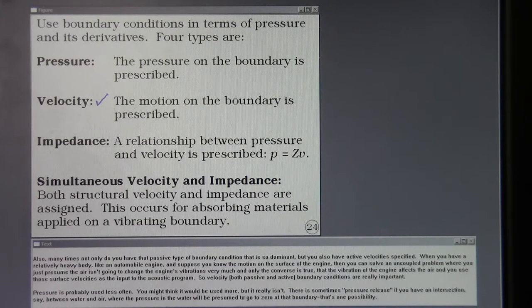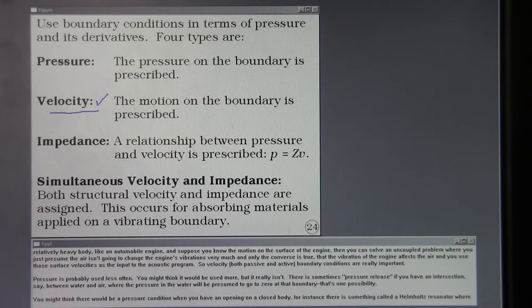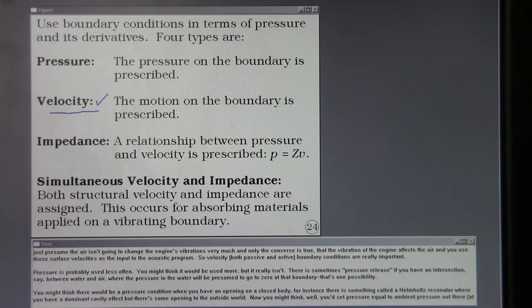Also many times not only do you have that passive type of boundary condition that's so dominant but you also have active velocity specified when you have a relatively heavy body like an automobile engine. And suppose you know the motion on the surface of the engine then you can solve an uncoupled problem where you just presume the air isn't going to change the engine's vibrations very much. And only the converse is true that the vibration of the engine affects the air. And then you use those surface velocities as the input to the acoustic program.